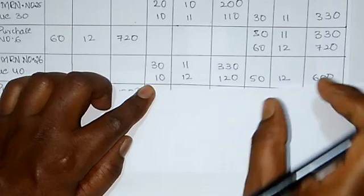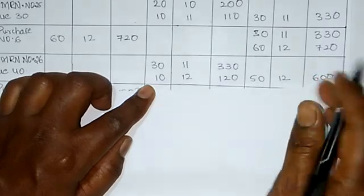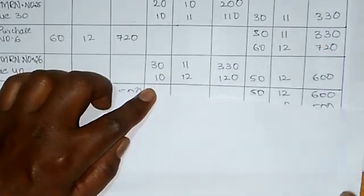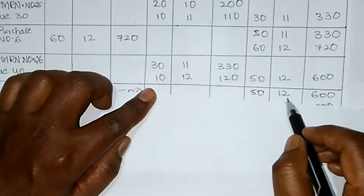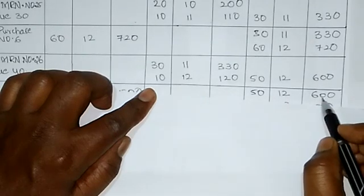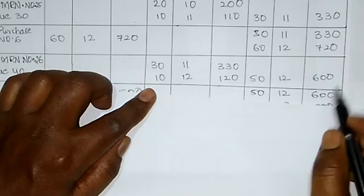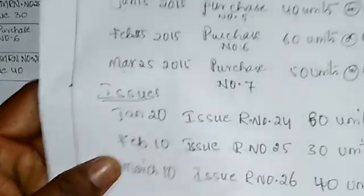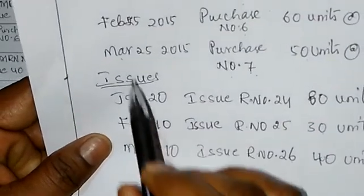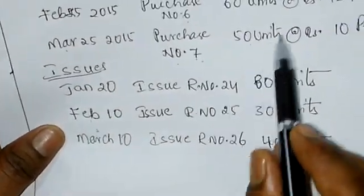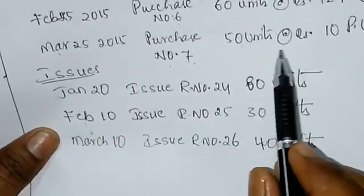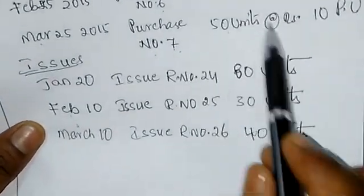The balance column now shows 50 units at Rs.12, amount Rs.600. Next transaction: March 25th purchase number 7, 50 units at rate Rs.10 per unit.